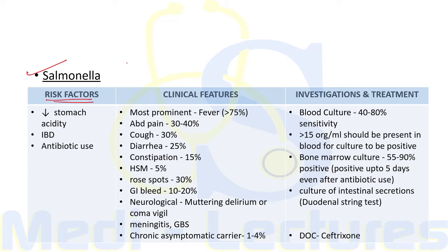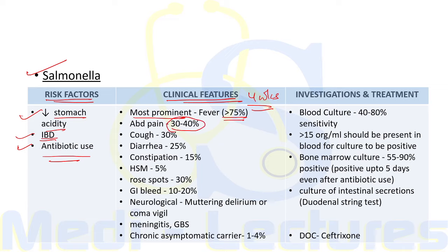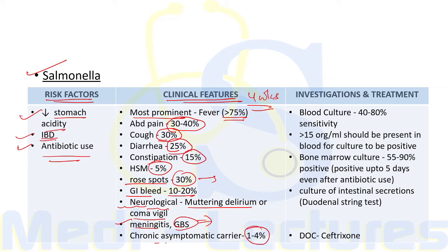Risk factors for enteric fever include decreased stomach acidity, inflammatory bowel disease, and antibiotic use. The most prominent clinical feature is fever — present in more than 75 percent of cases, lasting up to four weeks if untreated. Abdominal pain is present in 30–40 percent, cough in 30 percent, diarrhea in 25 percent, constipation in 15 percent. Rose spots appear in 30 percent after one week. GI bleed can occur in 10–20 percent. Neurological effects like muttering delirium or coma vigil, meningitis, and GBS can also occur. One to four percent become chronic asymptomatic carriers.